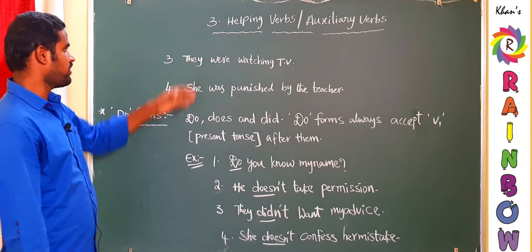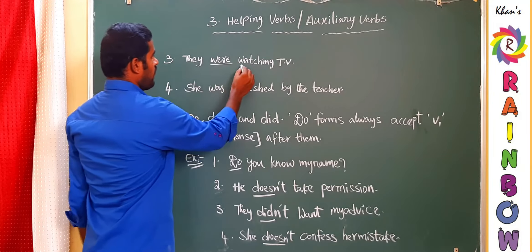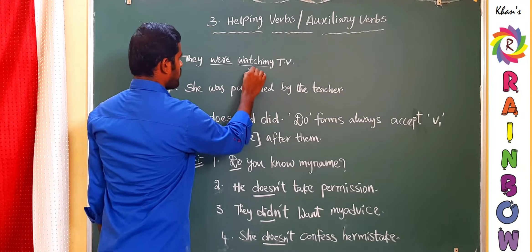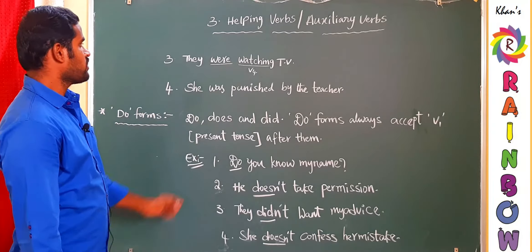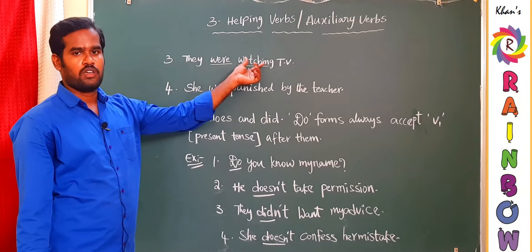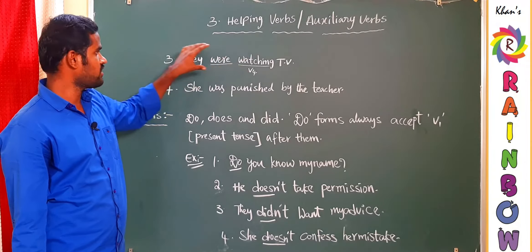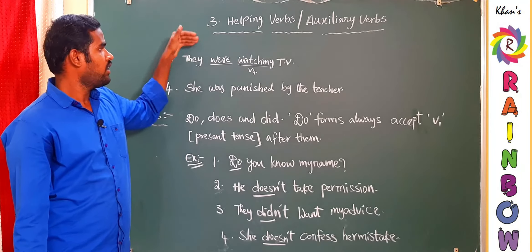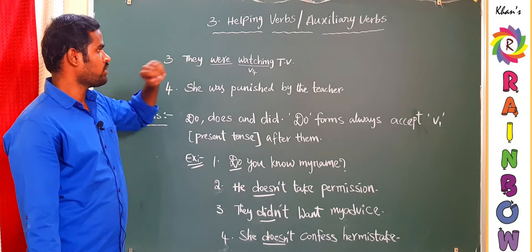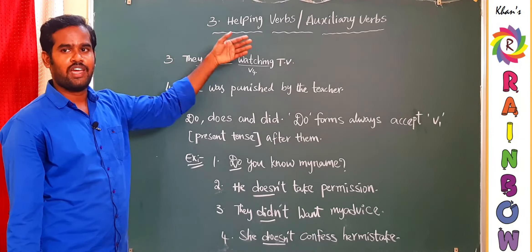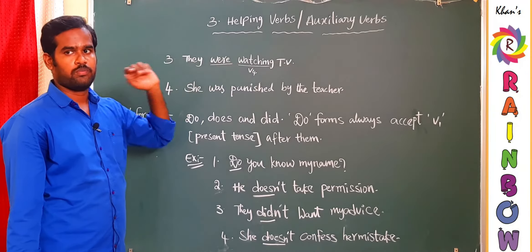In the next example, the B-form is 'were' and the verb after it is in present progressive form, that is V4. The subject 'they' is watching TV — the subject is performing the action — so the statement is in active mode. Therefore V4 is used after the B-form, consistent with the rule.